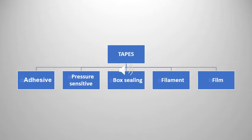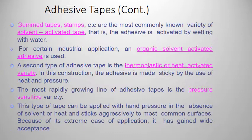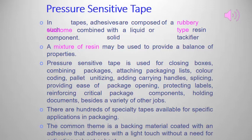Tapes are used for holding, bundling, sealing, protecting, and color identification. Pressure-sensitive tapes are composed of a mixture of resin and elastomer. They are used for closing boxes, protecting labels, holding documents on boxes, etc.